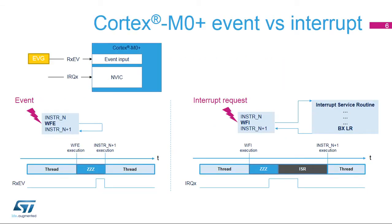The Cortex M0 Plus supports two ways to enter a low power state: first, executing the Wait for Event instruction (WFE); second, executing the Wait for Interrupt instruction (WFI). With WFE, the first instruction executed after a wake-up event is the next sequential one, instruction N plus 1 in the sequence. By implementing WFI, the processor jumps to the interrupt service routine when an enabled interrupt request is received. Note that an interrupt request is a WFE exit condition, but an event received on RXEV is not a WFI exit condition.